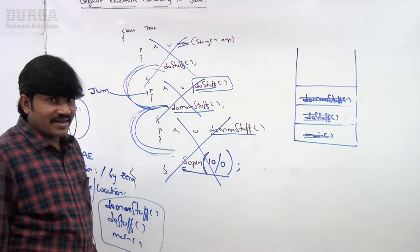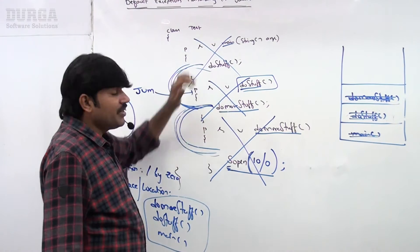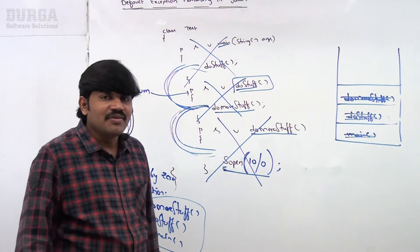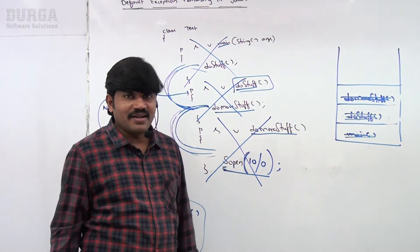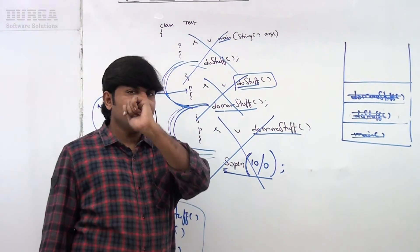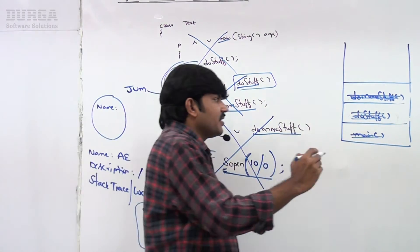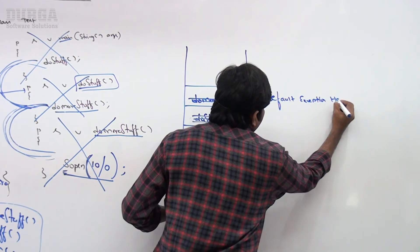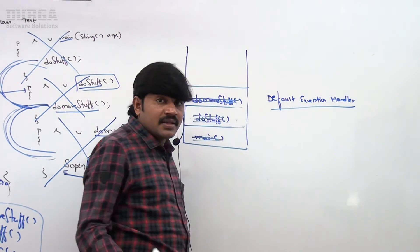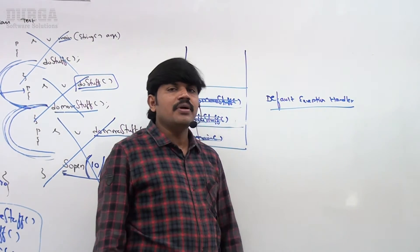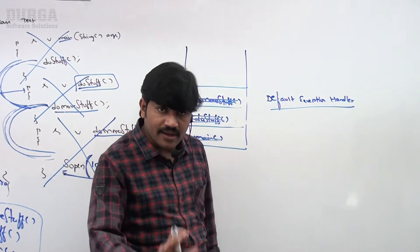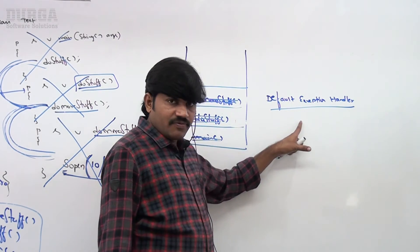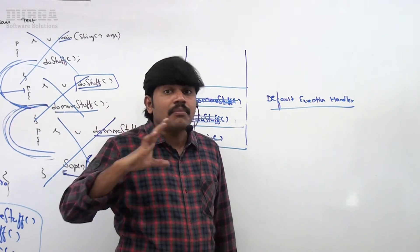Now observe — who called the main method? JVM itself called the main method. So finally, JVM is responsible to handle this. JVM maintains one assistant called the default exception handler. JVM hands over the exception object to the default exception handler. The default exception handler just prints the exception information to the console and terminates the program abnormally.